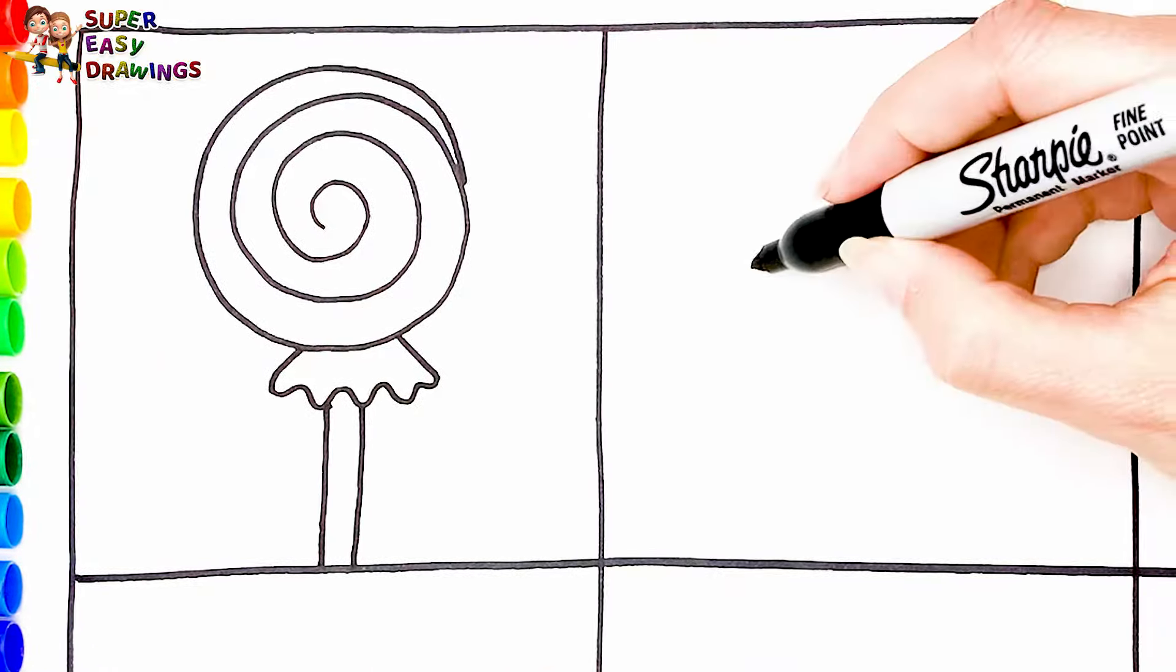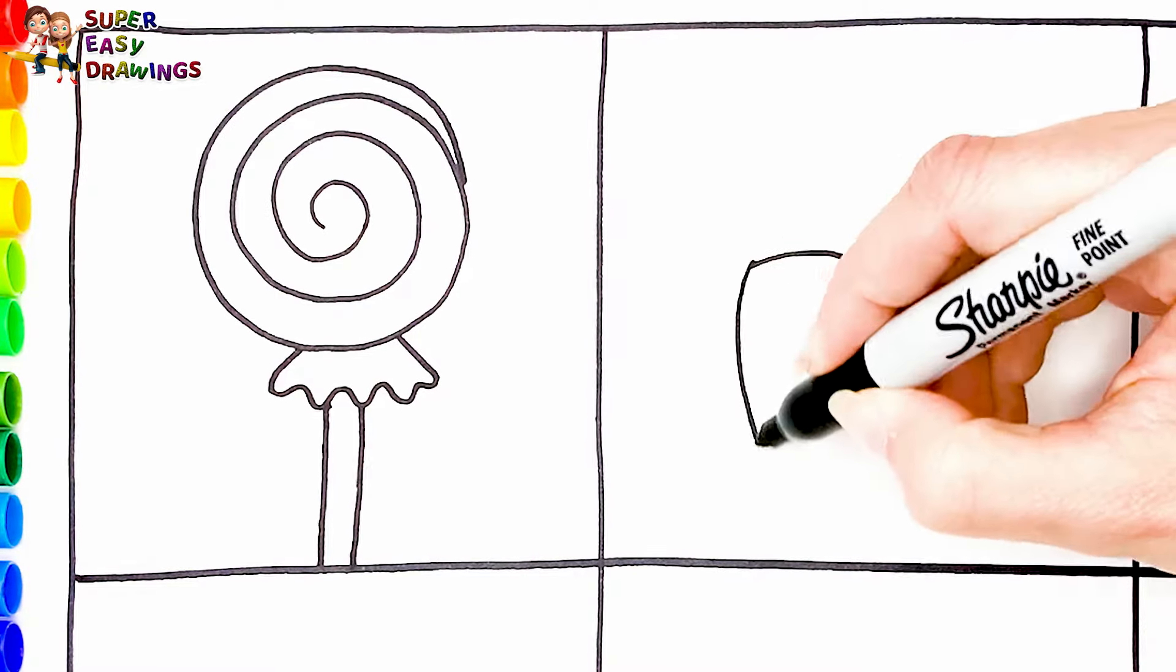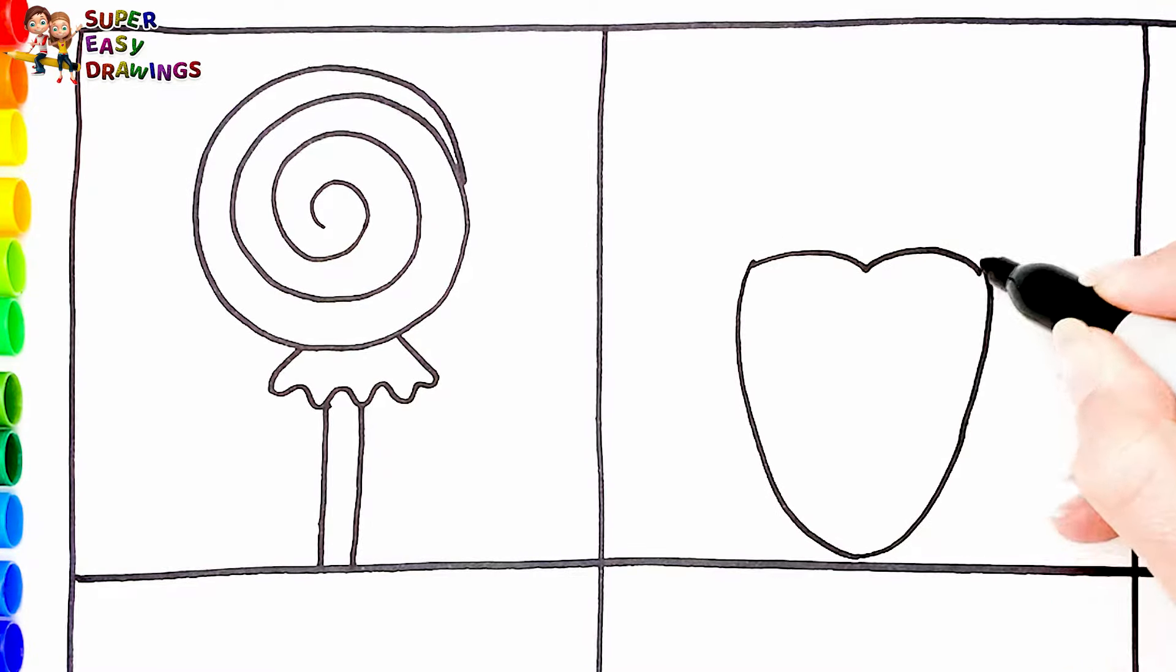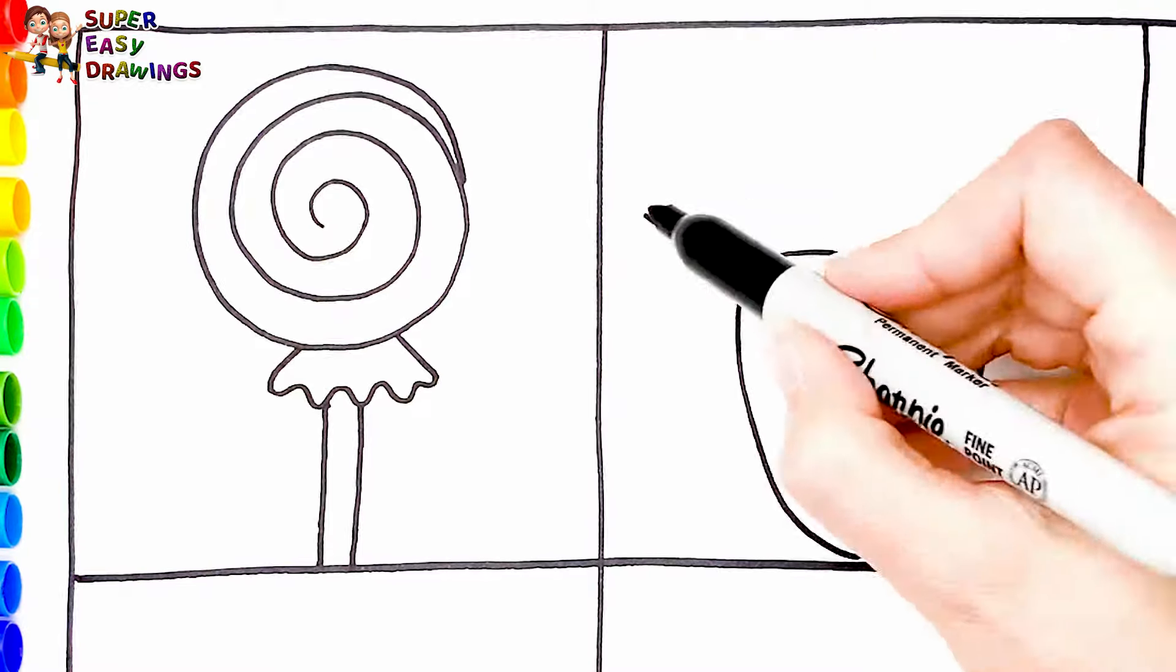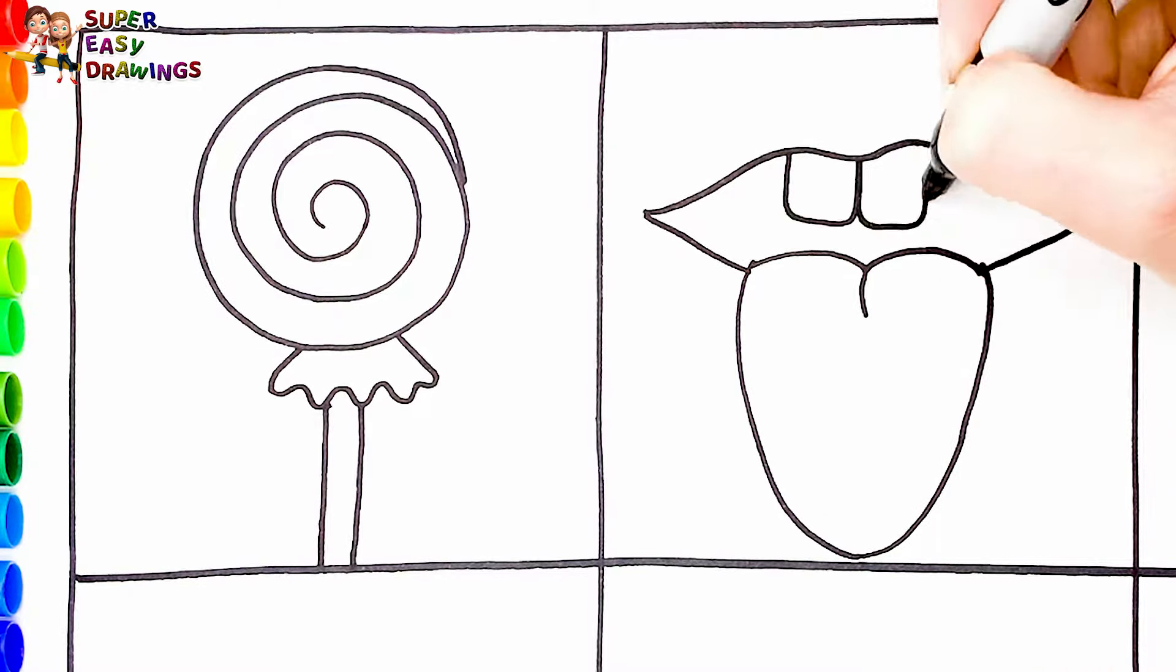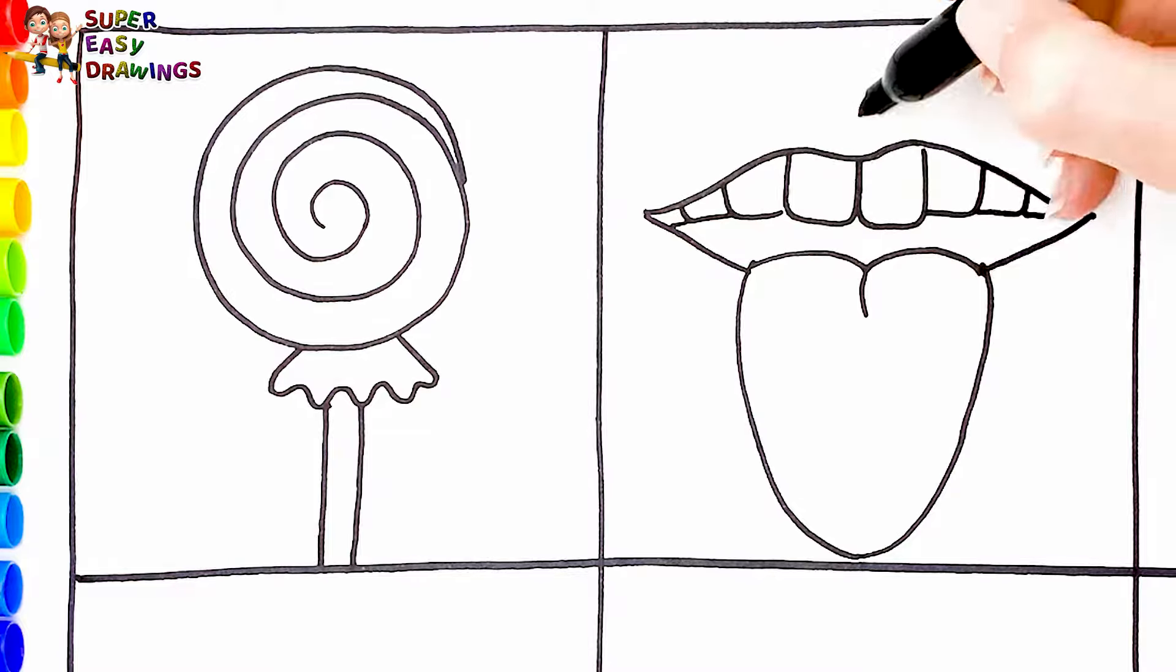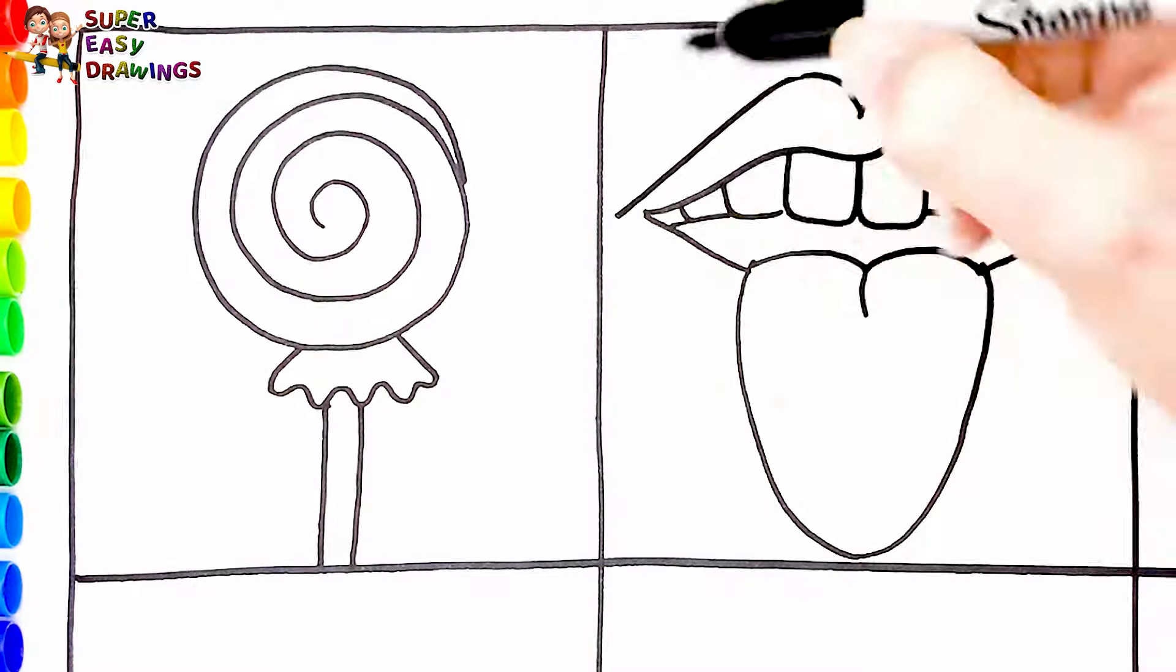Next to it, I draw a mouth with a tongue out. I draw the tongue, then the tooth like this, and finally the nice lips.